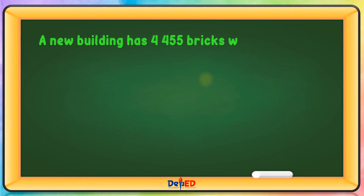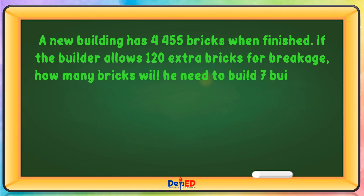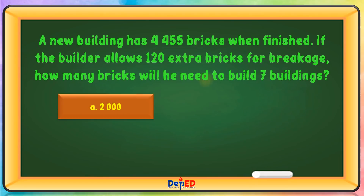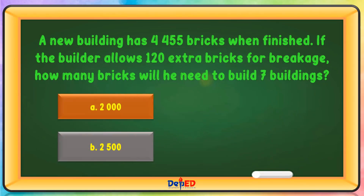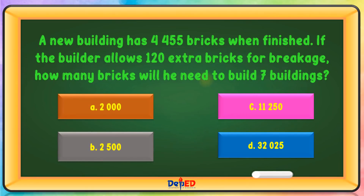A new building has 4,455 bricks when finished. If the builder allows 120 extra bricks for breakage, how many bricks will he need to build 7 buildings? A. 2,000  B. 2,500  C. 11,250  D. 32,025. The correct answer is D.